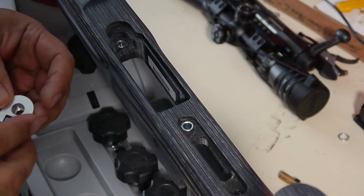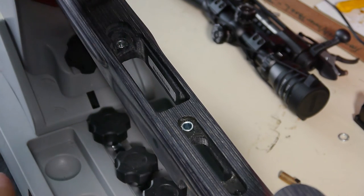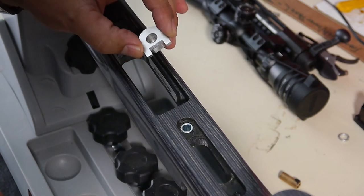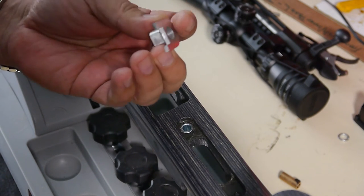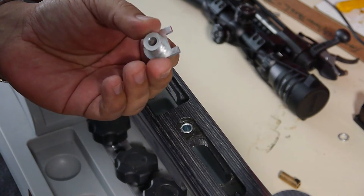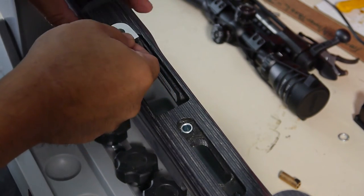Now for the front clip, everybody knows with the Boyd stock, it's a plastic piece. So I went and CNC milled this out of 6061 aluminum, and it fits right in.